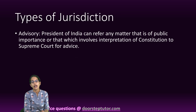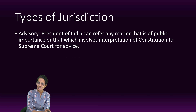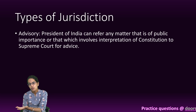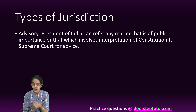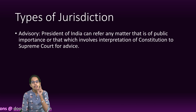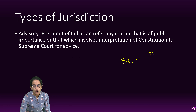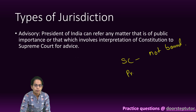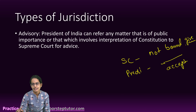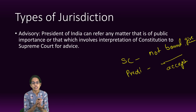The last is advisory jurisdiction, and this is a double-edged sword. The President can refer any matter that is of public importance and requires interpretation of the Constitution to the Supreme Court for advice. Similarly, the Supreme Court can provide advice on the same matter. But in both cases, the President may or may not consider the Supreme Court's advice. The Supreme Court is not bound to give advice in all cases, and even if advice is given, the President is not bound to accept it.